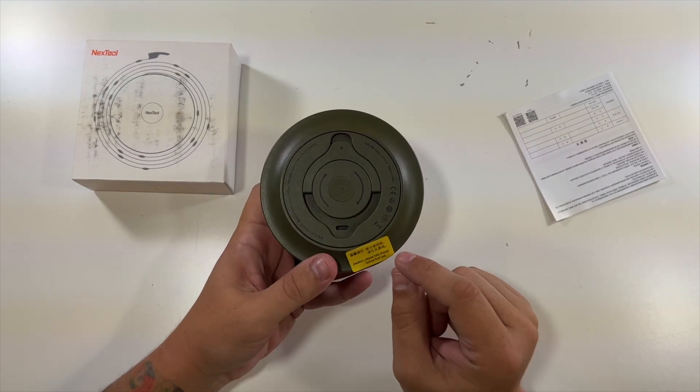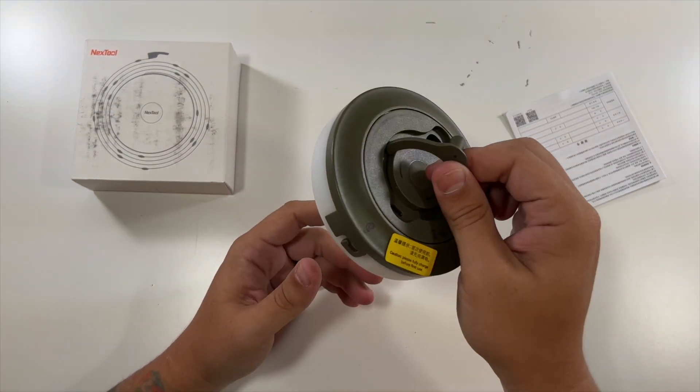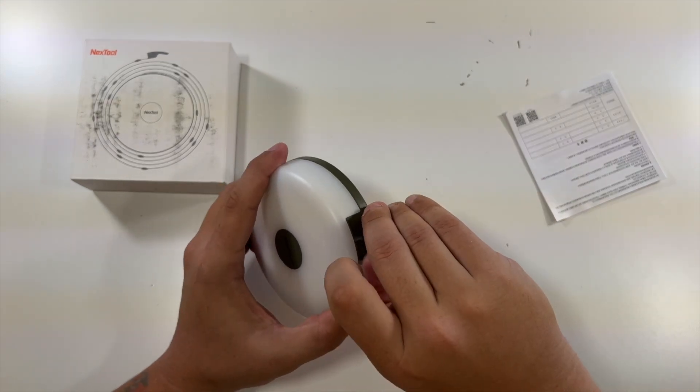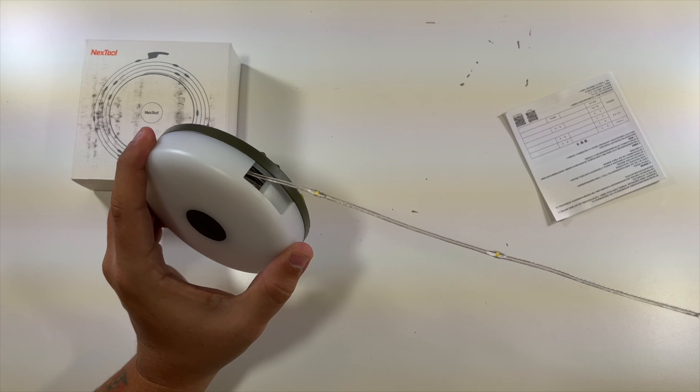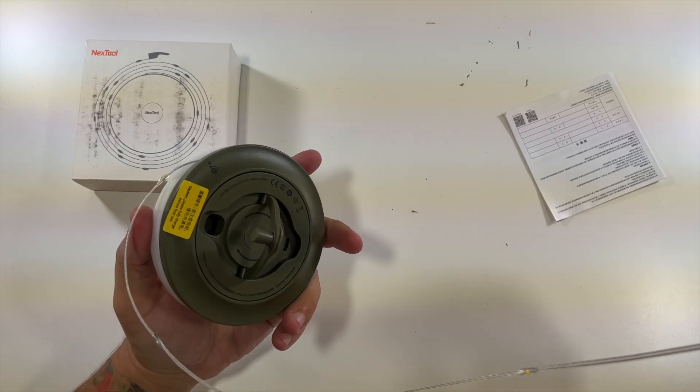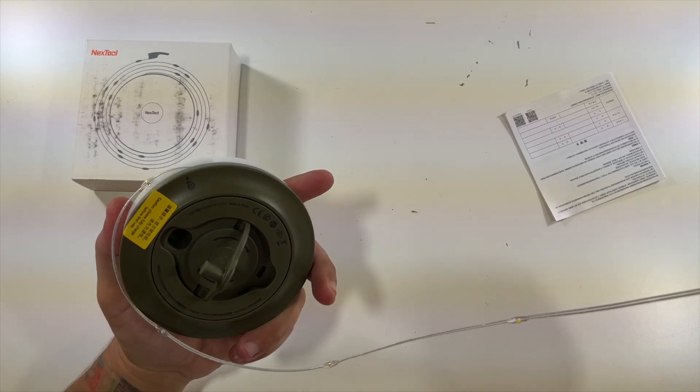Little USB-C port there to recharge it. You got this nice hook for hanging it. You've also got a hook here which pulls out some of the LEDs. So you're able to kind of run this however you may want to give yourself light while you're camping.